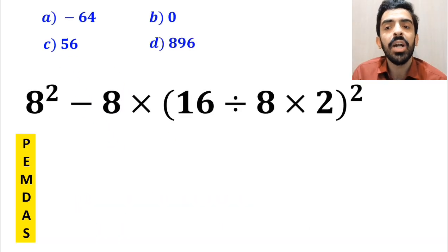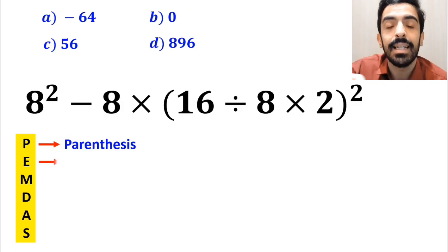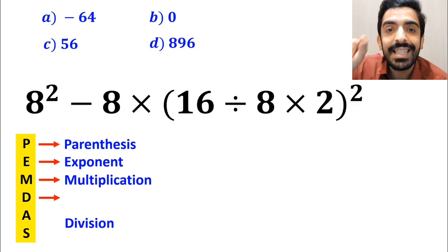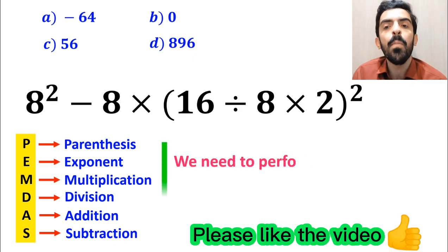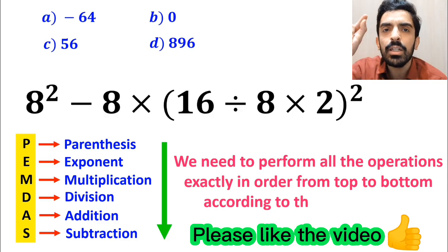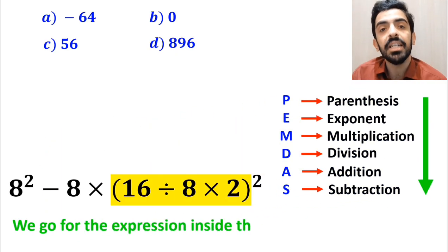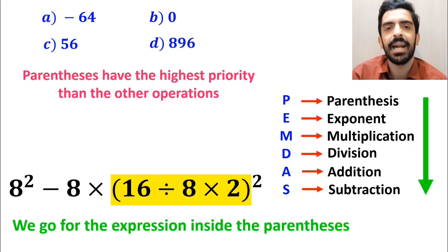To solve this question, we must carefully follow the PEMDAS rule step by step. In this rule, P stands for parenthesis, E stands for exponent, M stands for multiplication, D stands for division, A stands for addition, and S stands for subtraction. We need to perform all operations exactly in order from top to bottom according to the PEMDAS rule. So first we go for the expression inside the parenthesis, because parenthesis have the highest priority among the other operations.